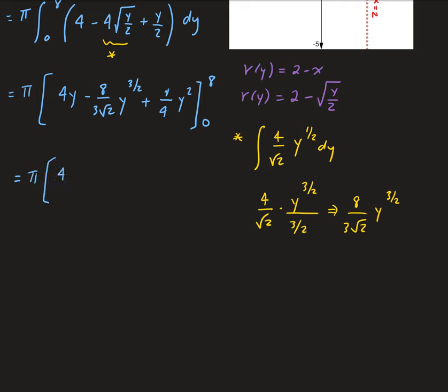Plugging in y equals 8: 4 times 8 gives 32. Then we have minus 8 over (3√2) times 8 to the 3/2. And plus 64 over 4, which gives 16. For y equals 0, since we have a y in each term, we get 0.